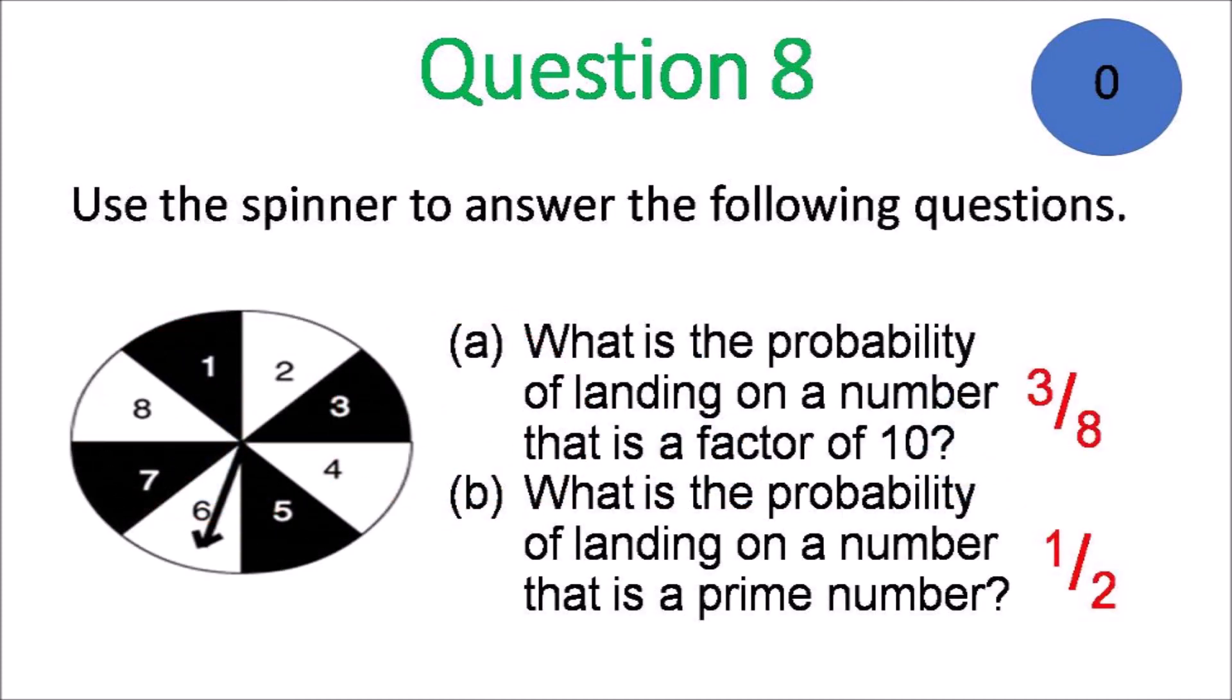Question 8. Probability of landing on a number that is a factor of 10: 1, 2, and 5. The factors that are 3 eighths. And landing on a prime number, prime numbers are 2, 3, 5, 7. So that would be 4 eighths which is a half.